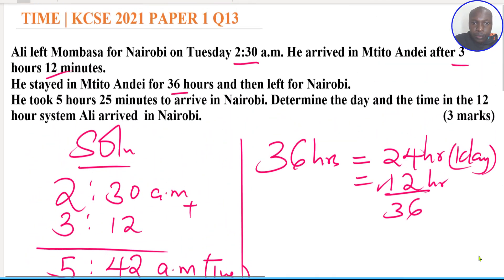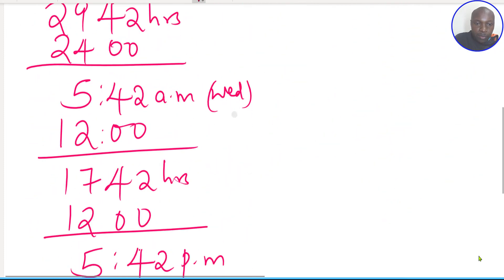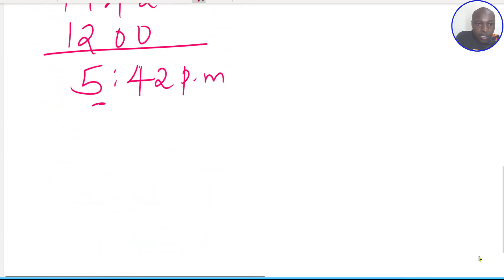One more thing is remaining. Then it took 5 hours and 25 minutes to arrive in Nairobi. So when you add 5 hours and 25 minutes, the minutes give 67. You carry 1 hour which is 60 minutes, so you get 07 minutes. And then the hours will give 11.